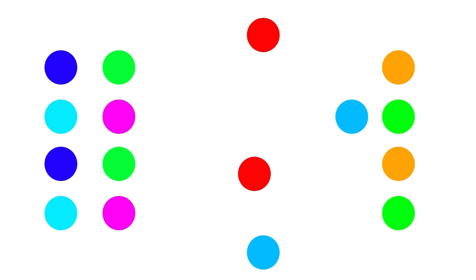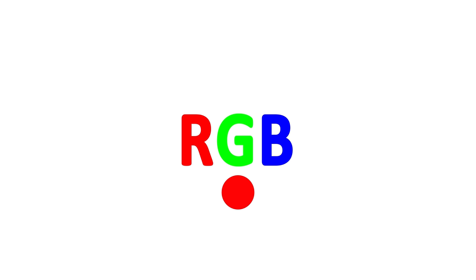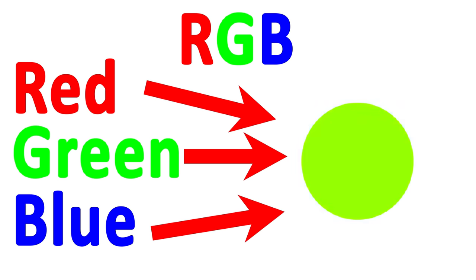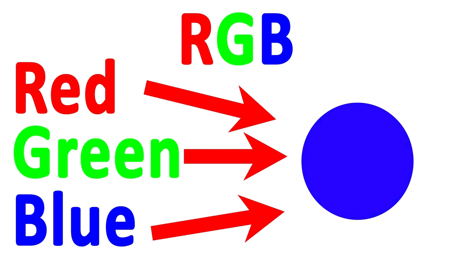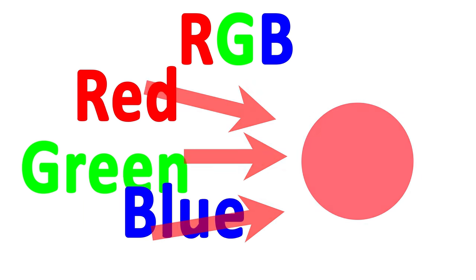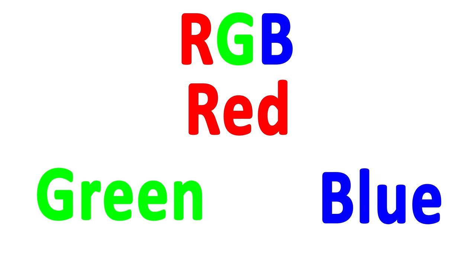The colors that make up each individual pixel in your monitor are created with various compositions of the RGB color scheme — a certain amount of red, green, and blue. With different amounts of each, you can create any color with any shade, saturation, darkness, or lightness. Whenever you see the term RGB, this is what it's referring to: colors based off of combinations of red, green, and blue.